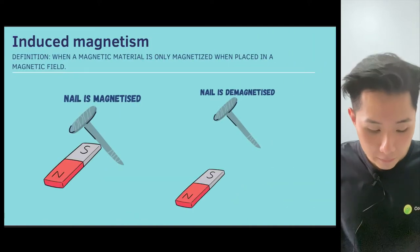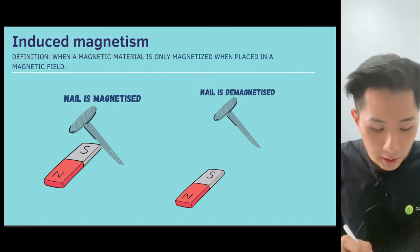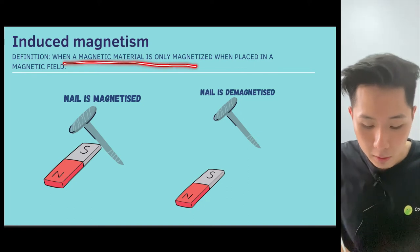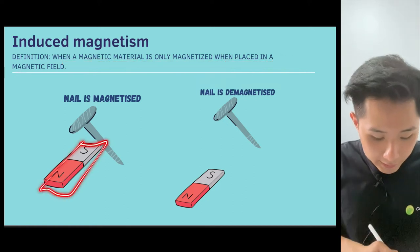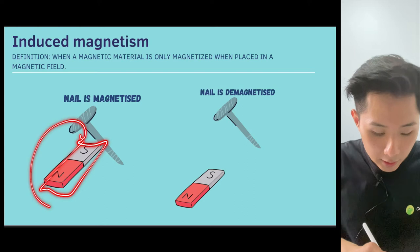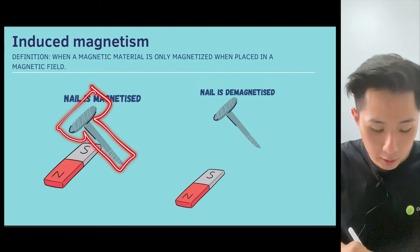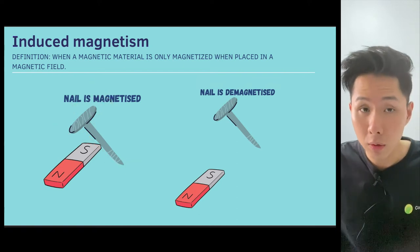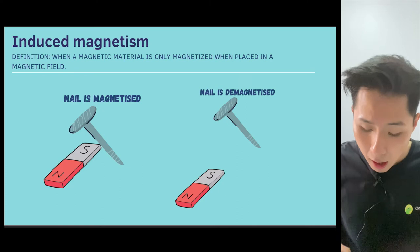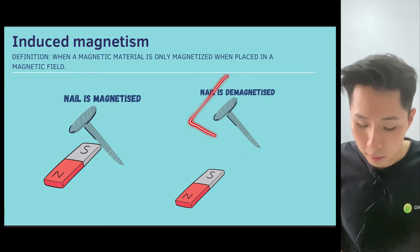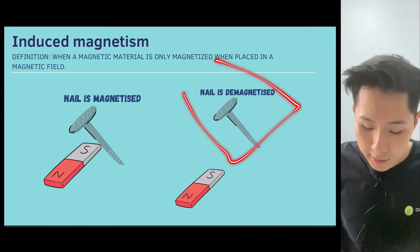The concept of induced magnetism further explains the difference between magnetic materials. Induced magnetism is when a magnetic material is only magnetized when it is in a magnetic field. For example, surrounding this magnet here there is a magnetic field. So when we put a magnetic material like a nail nearby it, it will be able to attract the nail — we say the nail is now magnetized. However, if you were to remove the magnet, because the nail is no longer in the magnet's field, it is now demagnetized.